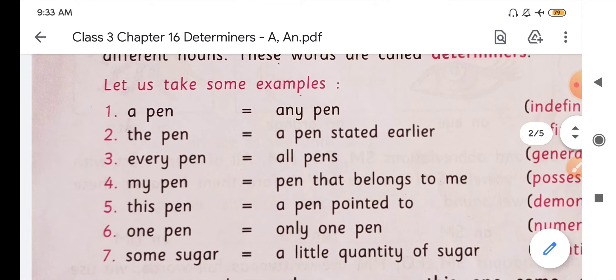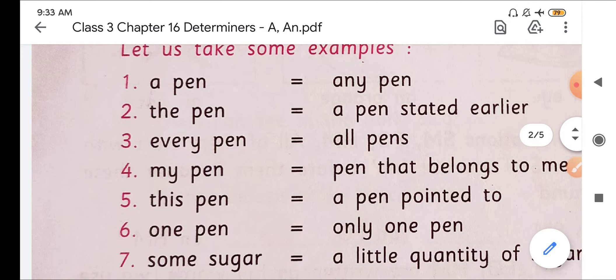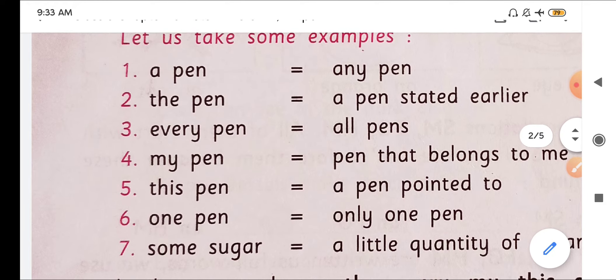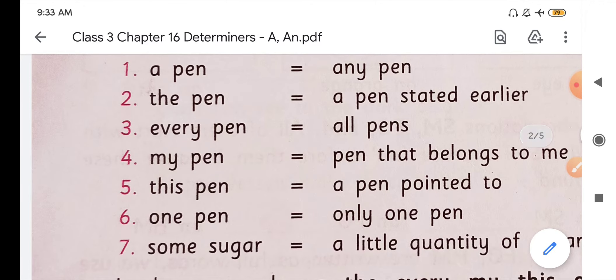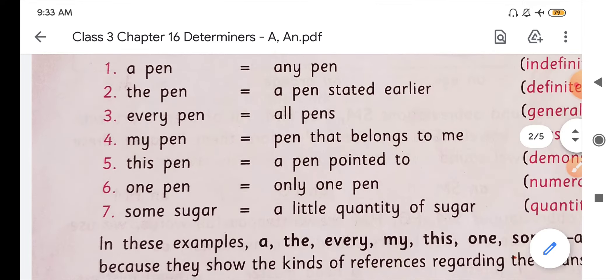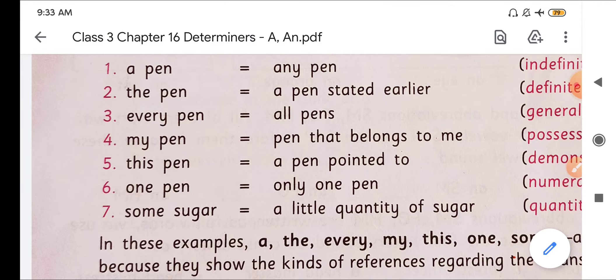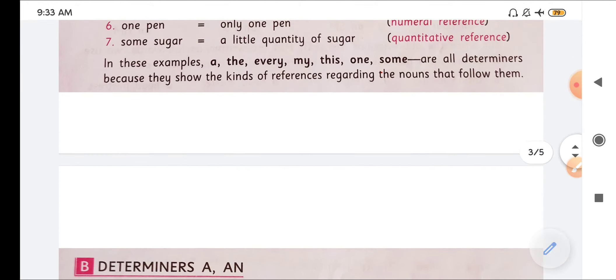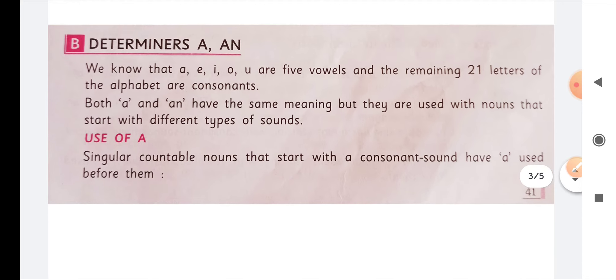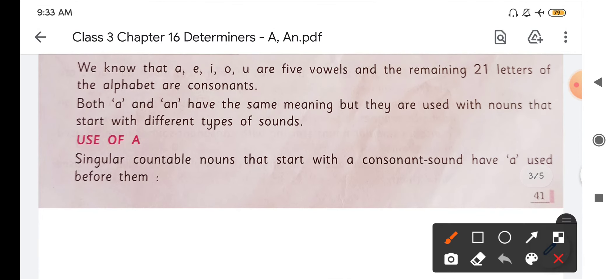These determiners, a, the, every, my, this, one, some, these all are determiners because it tells us the kind of reference that noun shows. So now we will see determiners a and an first of all.